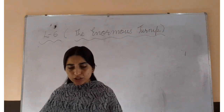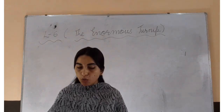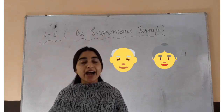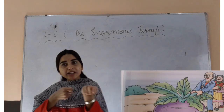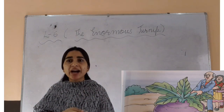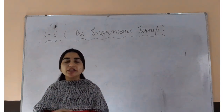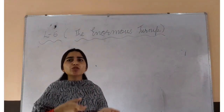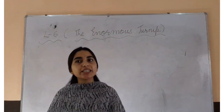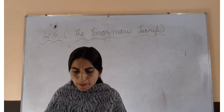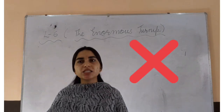Turn to page number 24. The old man and the old woman pulled and pulled. The old man is pulling the turnip and behind him, the old woman is also helping him to pull the turnip. Both of them pulled and pulled, but they could not pull up the enormous turnip.